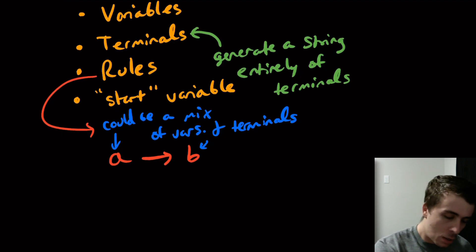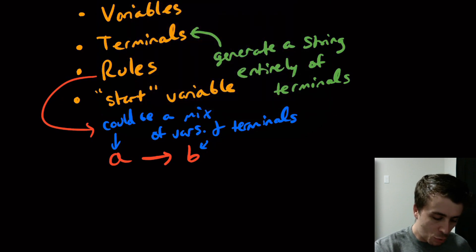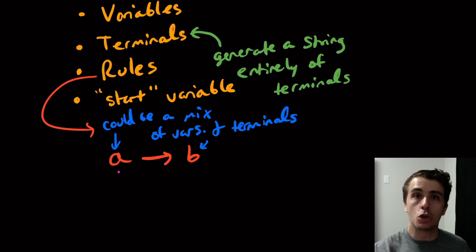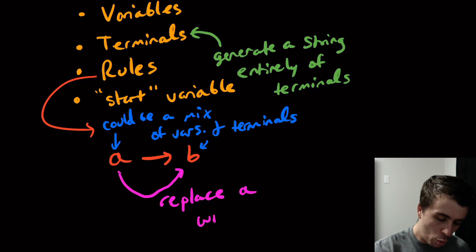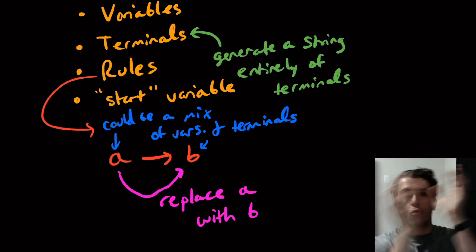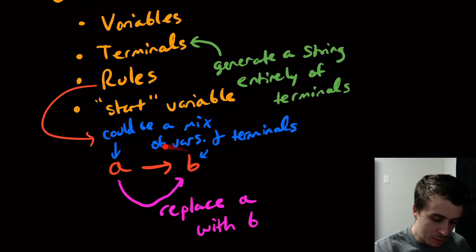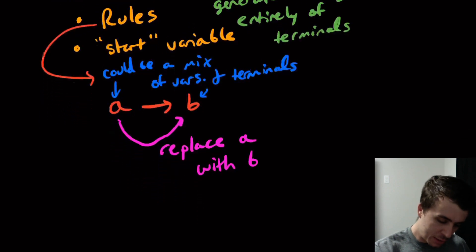What does a rule actually do for us? It says: if we see an A, and this rule exists, we are allowed to convert it — to replace whatever A is with the right-hand side of the rule. So we take the left-hand side and replace it entirely with whatever is on the right side, as determined by the rule set. Let's do a quick example.